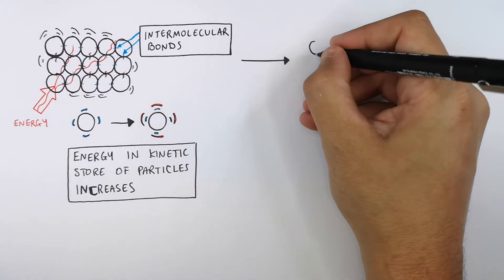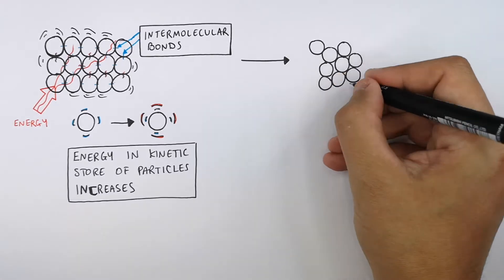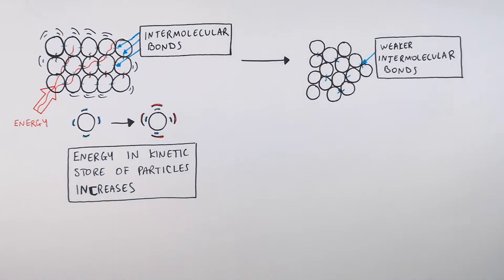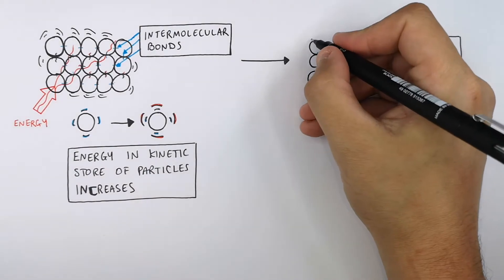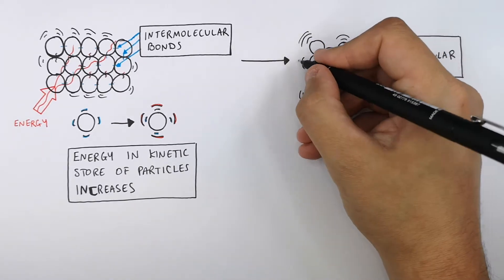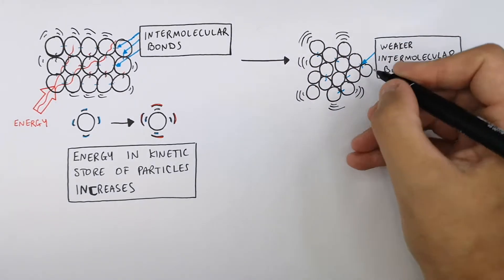The substance will then change state into a liquid. The particles now take up a more random, irregular arrangement, and the particles have more kinetic energy in their kinetic energy stores than in a solid.